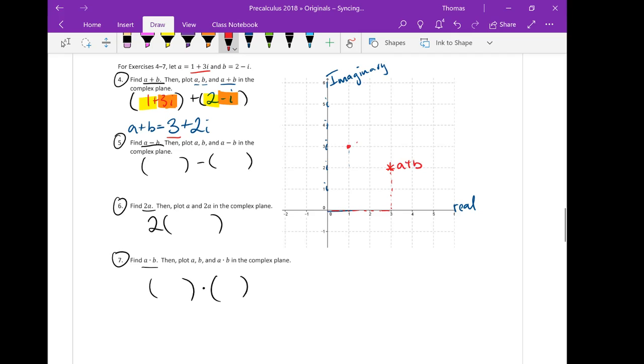Let's also plot a and b while we're here. 1, 3i is a, and 2 minus i is b. Great. So we've plotted our first one.